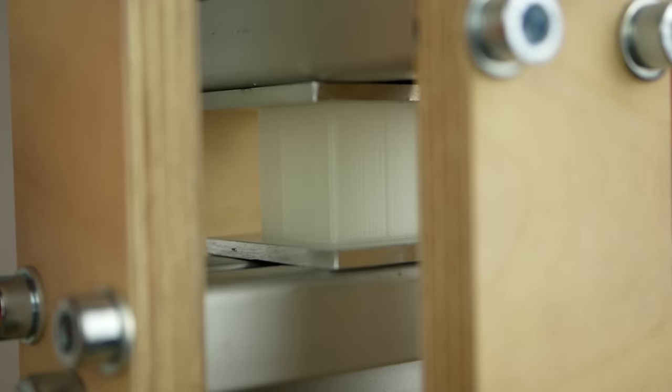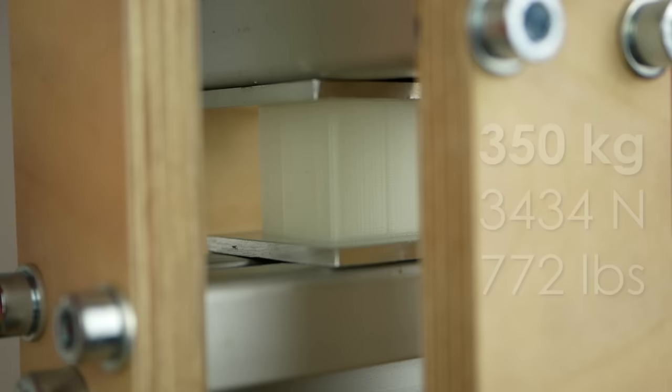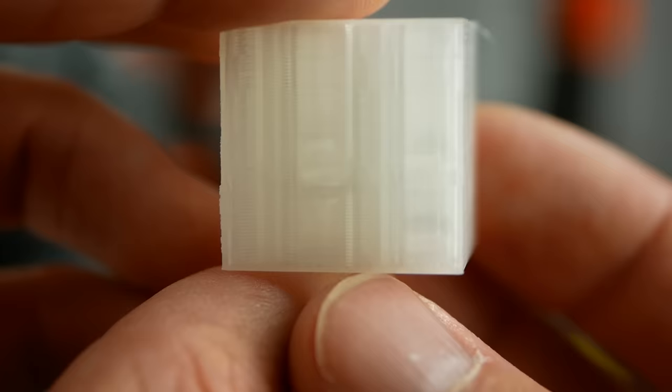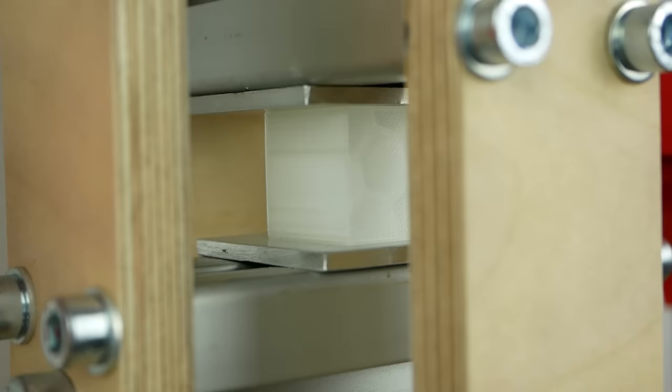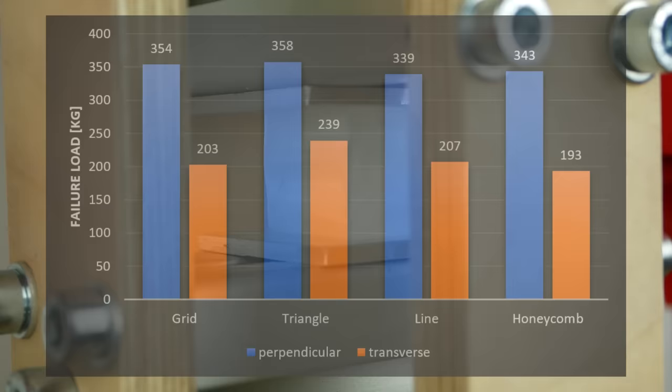Unfortunately the cubes of the grid, triangle, line and honeycomb patterns were too much for my machine and it stalled for all of them at around 350kg of load. Taking a look at the samples still already showed that they were just before failure because the outer walls already showed buckling marks. So for these samples we don't really have the exact value to compare against but if we still look at the transverse strength the other loading direction is at least 30-45% weaker.